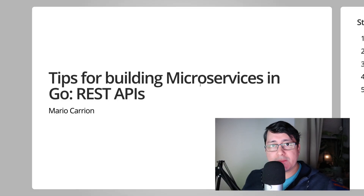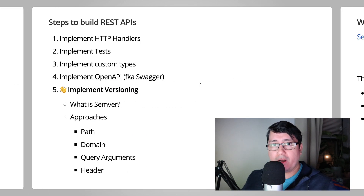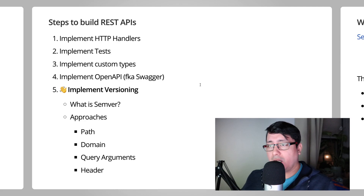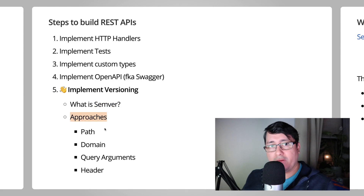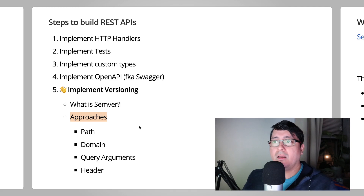Hello, my name is Mario. Welcome to another video. In today's episode, I will be sharing with you another tip for building microservices in Go, specifically versioning REST APIs. This is step number five of building REST APIs. I will be discussing versioning, covering what is Semver, a few different approaches — specifically four of them — and finally, what to consider when introducing, transitioning to, and deprecating API versions.